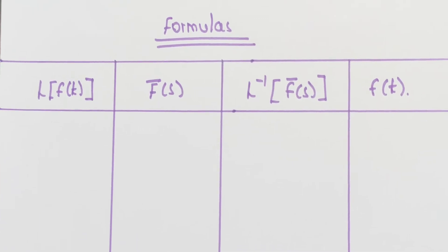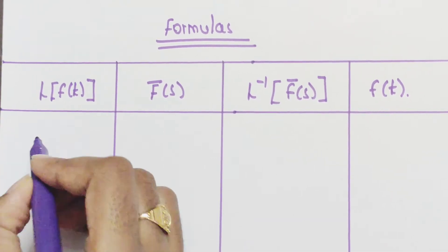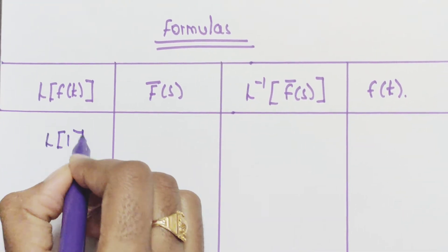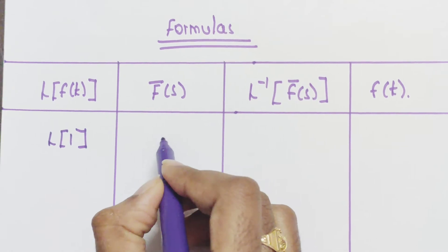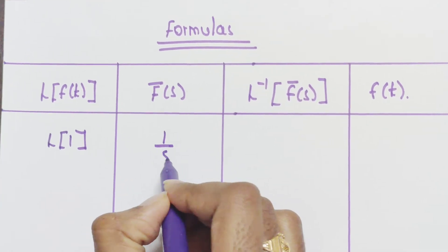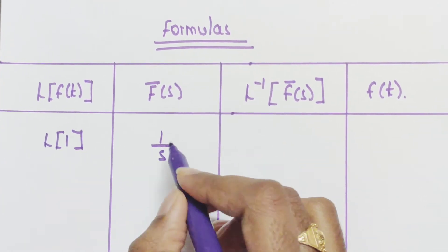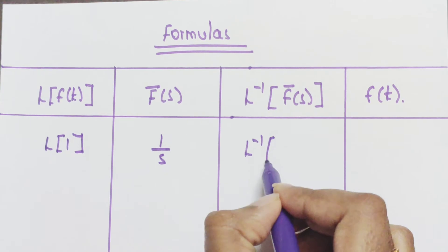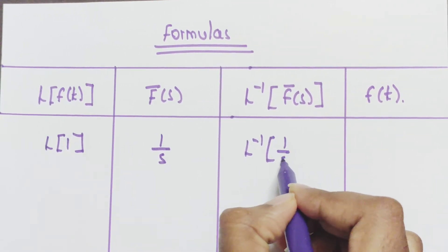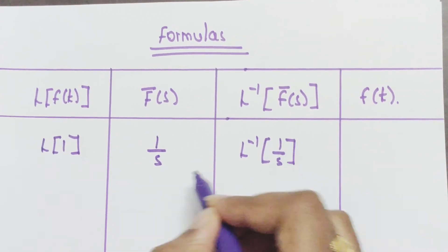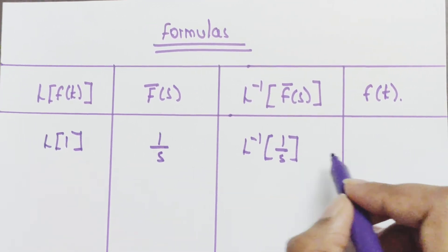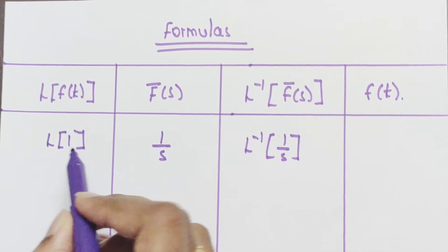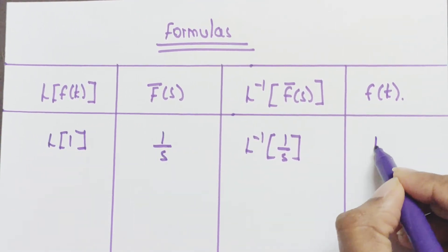Coming to the first formula. We know that Laplace of 1 is 1/s. So applying the inverse Laplace transform to 1/s, the answer is f(t) = 1.